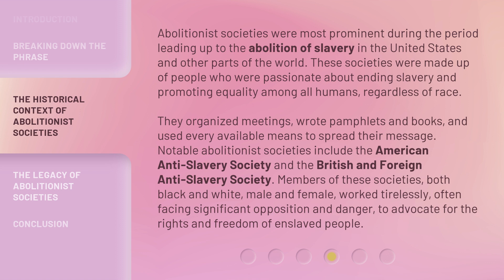They organized meetings, wrote pamphlets and books, and used every available means to spread their message. Notable Abolitionist Societies include the American Anti-Slavery Society and the British and Foreign Anti-Slavery Society. Members of these societies, both black and white, male and female, worked tirelessly, often facing significant opposition and danger, to advocate for the rights and freedom of enslaved people.